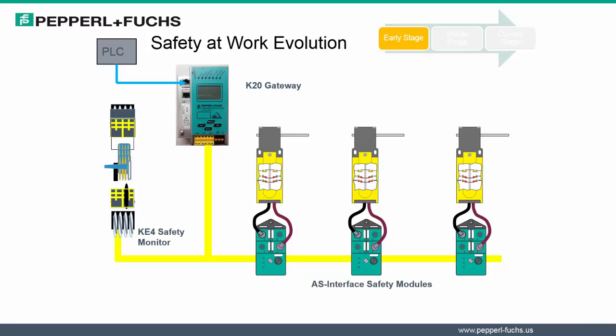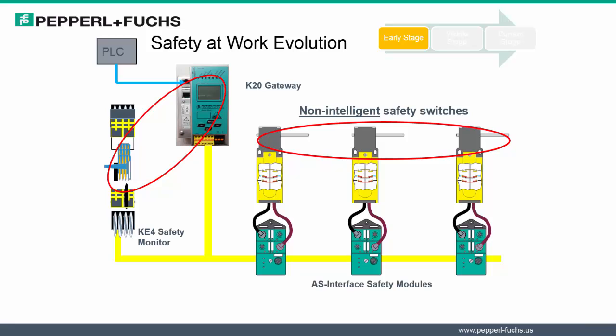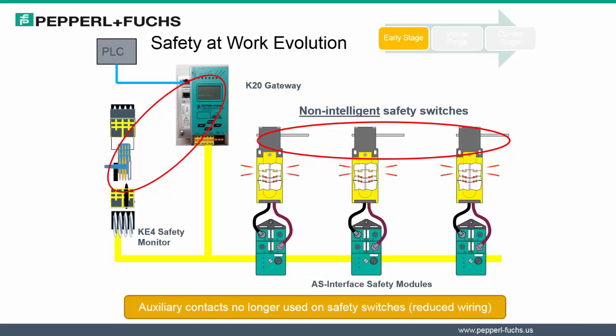Let's begin with the early stage of the evolution. AS Interface Safety at Work is a system that enables networking of safety devices, safety door switches, e-stops, and other safety devices using standard AS Interface networks. In the early stages, the AS Interface gateway was separated from the safety monitor. However, the safety monitor took the place of a safety relay in conventional hardwired systems. Since the devices connecting to the modules were unintelligent, the actual modules were addressed, not the devices. One last observation is that auxiliary contacts were no longer used as with traditional safety devices, which further reduced some of the wiring required.